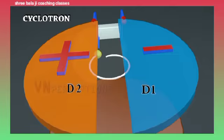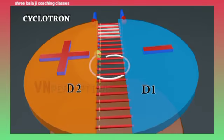Now D2 becomes positive and D1 becomes negative. When it comes out of D, it again comes under the influence of electric field. The electric field accelerates the charged particle.